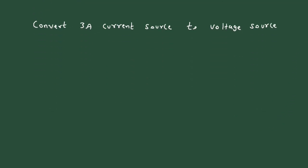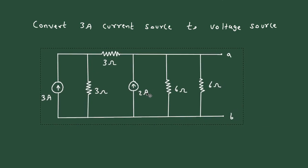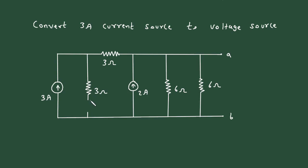If we convert this current source into its equivalent voltage source, then at this 3 ohm resistor, there will be a series voltage source. The polarity of this voltage source will be positive on one side and negative on the other, according to the direction of this current source.